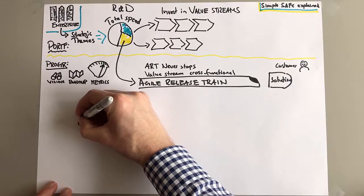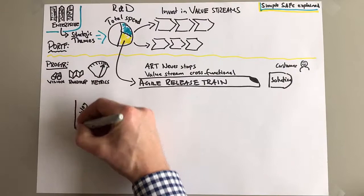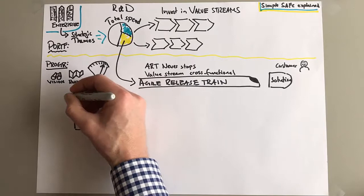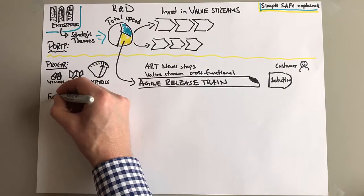And of course also on the program level you have a backlog. Yeah, you have a backlog, backlog of work or features. This backlog exists in a Kanban system.